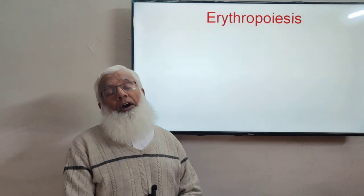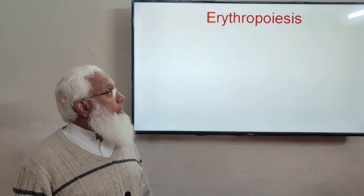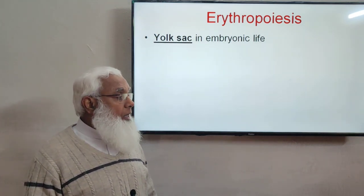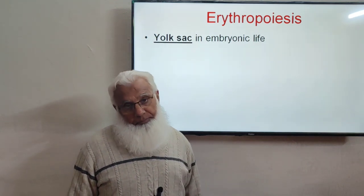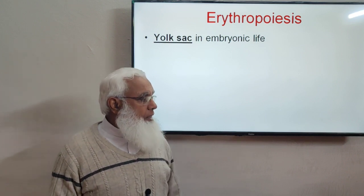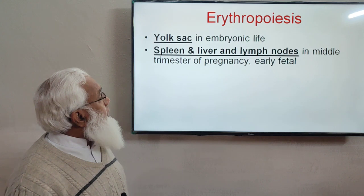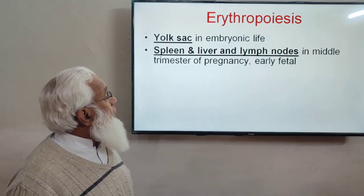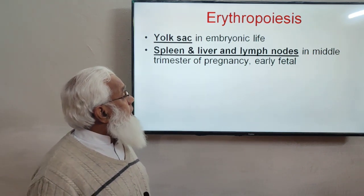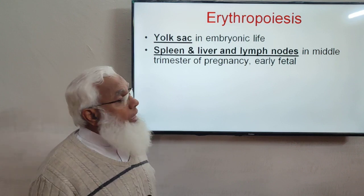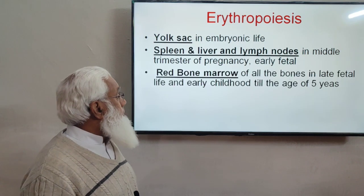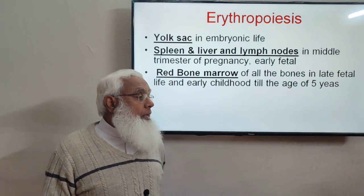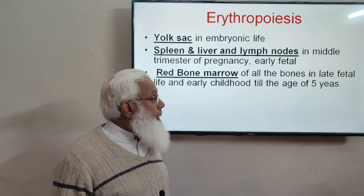Erythropoiesis is the formation and production of RBCs. In embryonic life, RBCs are synthesized from the yolk sac. Later, in the early fetal life during the middle trimester of pregnancy, the spleen, liver, and lymph nodes produce RBCs. Gradually, this production is taken over by the red bone marrow.